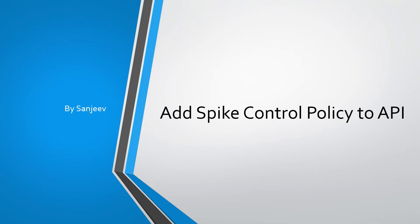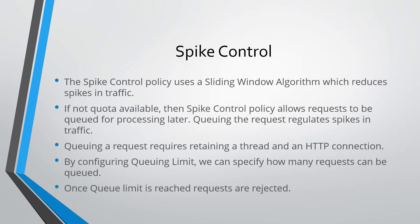Hi everyone, my name is Sanjeev. In this video I'm going to explain how spike control policy works. The spike control policy works based on a sliding window algorithm. We need to specify the time window and configure how many requests can be processed within that time window. Once that quota is reached, requests start getting queued.